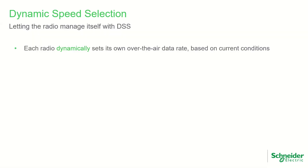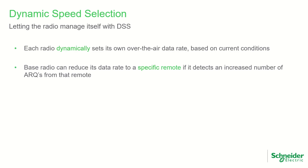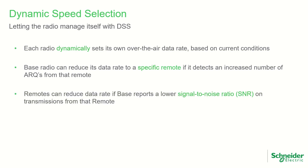Dynamic speed selection, or DSS, is a key feature available in firmware version 2.4 and newer. It allows each radio to dynamically set its own over-the-air data rate based on current conditions detected by the radio. For example, the base radio may reduce its data rate to a specific remote if it detects an increased number of ARQs from that remote, and a remote might reduce its data rate if the base radio reports a lower signal-to-noise ratio on transmissions from that remote.